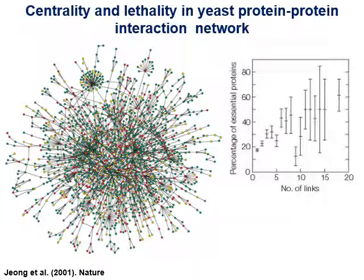This is true for the yeast protein-protein interaction network. Remember that network we discussed a lot in the last class. Just to clarify some points: the red nodes are essential — it means that if you knock out this protein, if you remove this protein from the yeast, the yeast cannot survive. It's essential, so if you remove this node it is lethal to the organism.